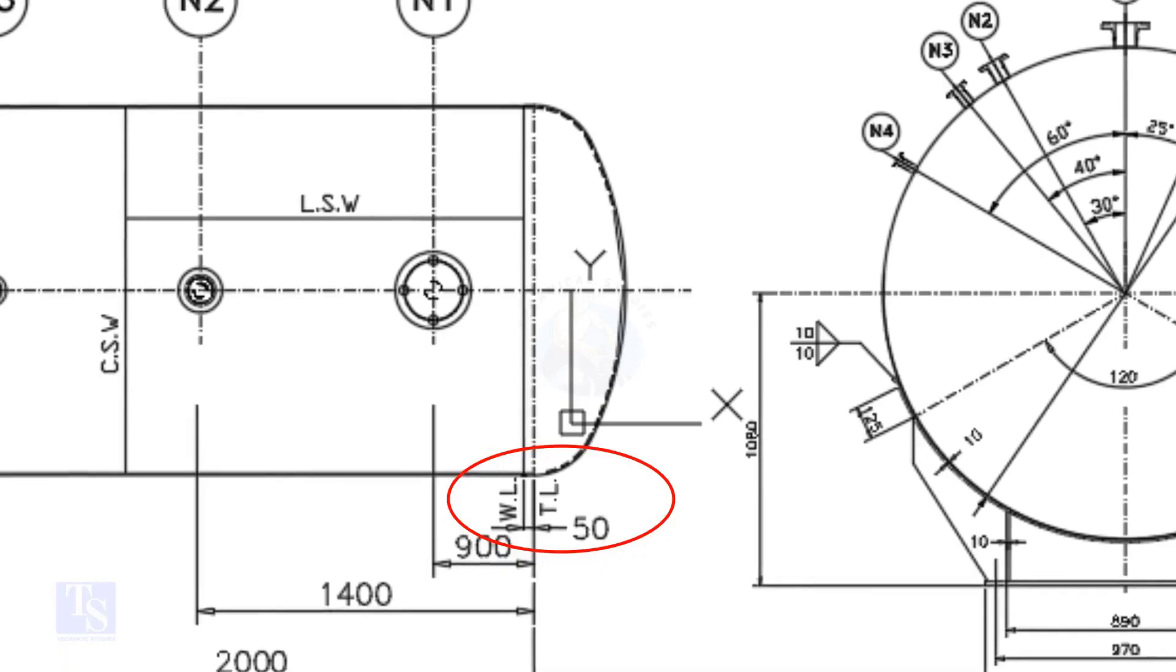What is TL and WL? TL stands for Tan Line and WL stands for Weld Line. The surface between the TL and the WL is called SF or Straight Face.